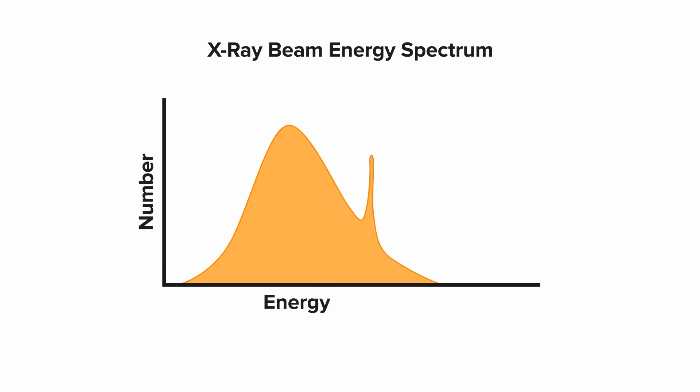Here's a graph of a typical X-ray beam energy spectrum. The X-axis represents the different photon energies in the beam from very low up to very high. The Y-axis represents the number of photons at each of those energy levels.